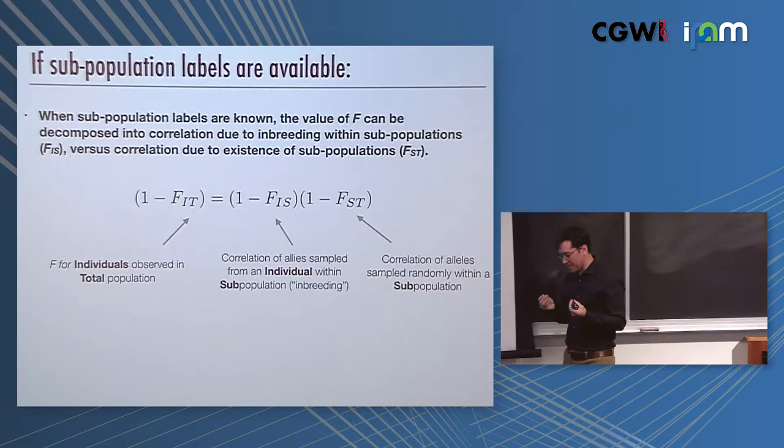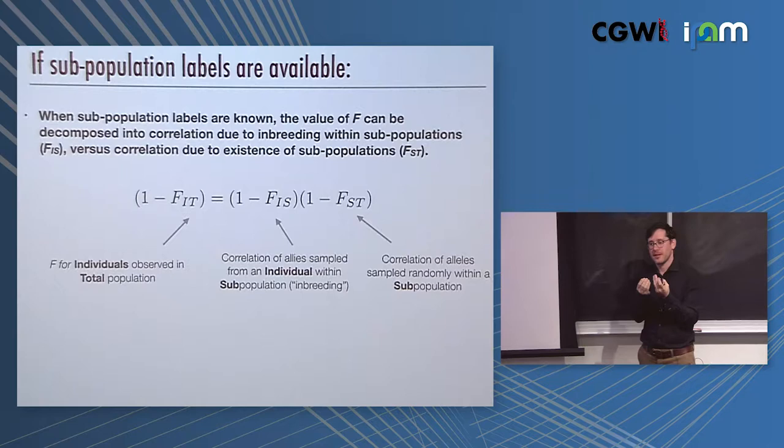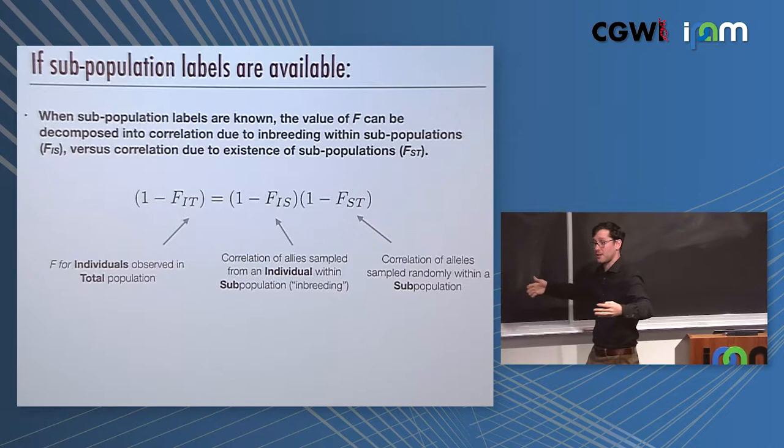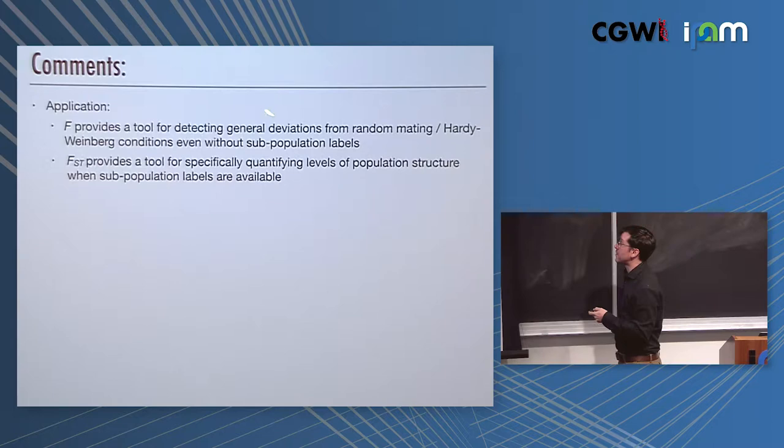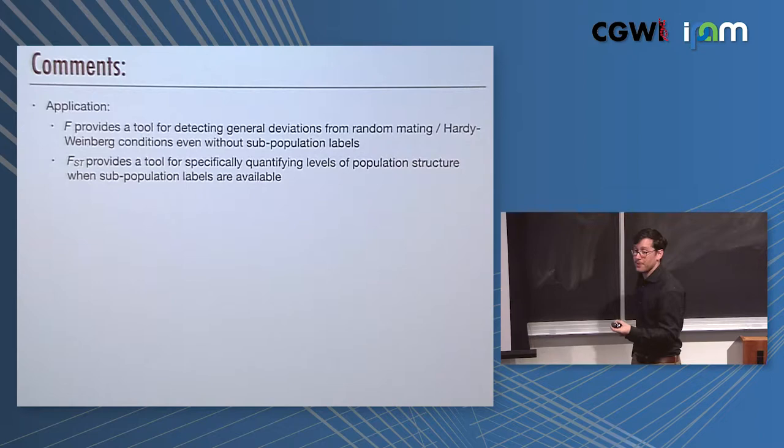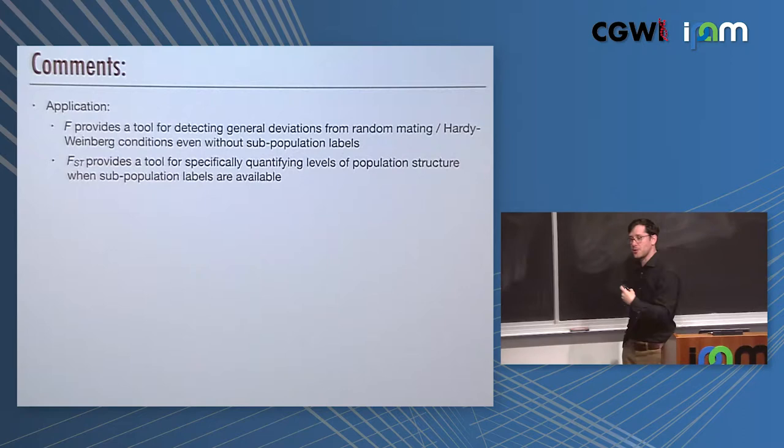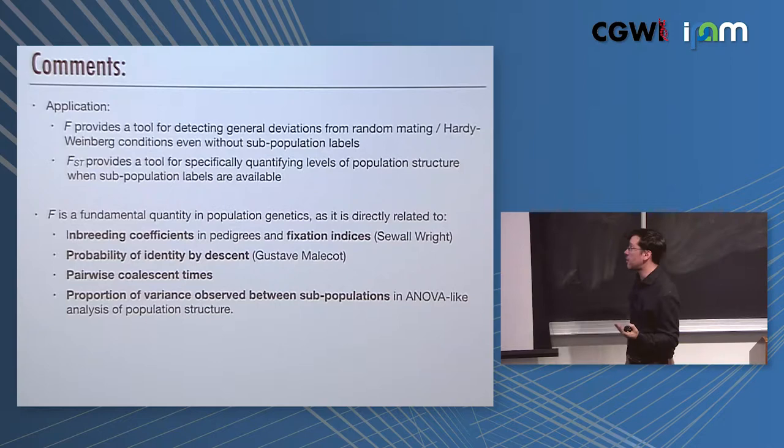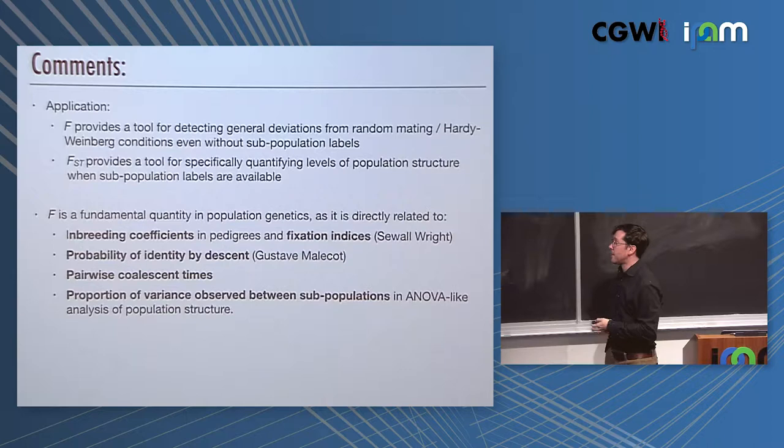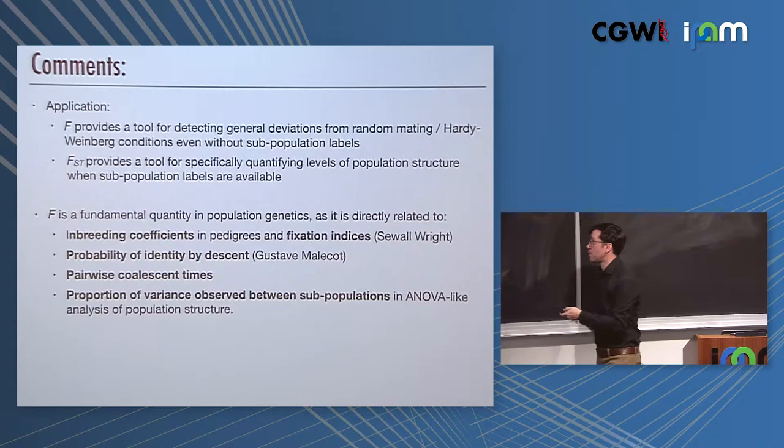That fact that human alleles at the global level are only correlated at a level of 10%, that's pretty weak. It's a sign of weak population structure, a sign that we have rapidly spread out across the globe as part of our out of Africa history. FST provides a tool for detecting general deviations from random mating Hardy-Weinberg conditions even without subpopulation labels. If you have subpopulation labels, you can calculate specifically FST and quantify just how strong that population structure is by that number reflecting the correlation.